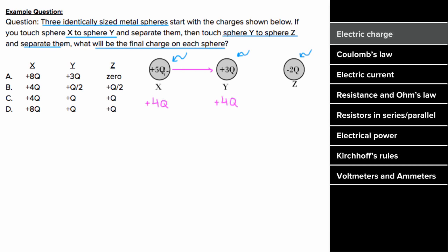If one of the spheres were larger, it would gain more of the charge, but the total charge would still be conserved. Now when sphere Y is touched to sphere Z, the total charge amongst them at that moment is positive 4Q plus negative 2Q, which is positive 2Q. They share it equally, so sphere Y has positive Q and sphere Z also has positive Q. So the answer is C.